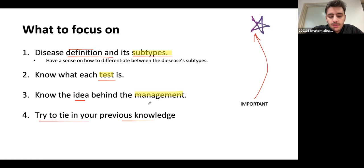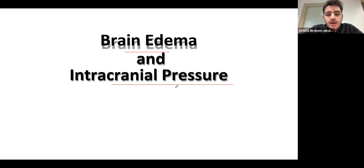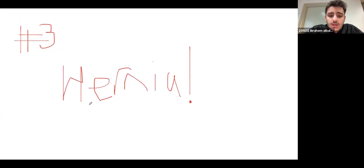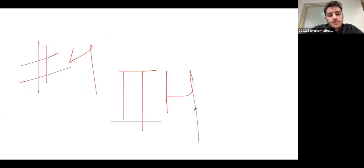Today's lecture is about brain edema and intracranial pressure. We're going to first discuss edema — vasogenic versus cytotoxic — the causes and imaging for each. Then we'll discuss some basic physiology, brain herniation, which is an important topic, and finally idiopathic intracranial hypertension.